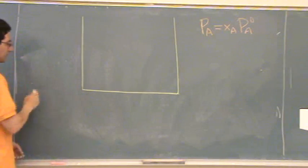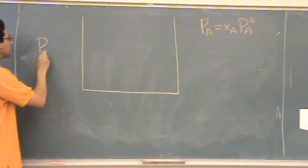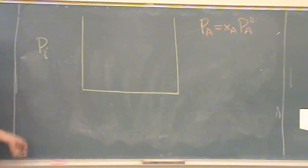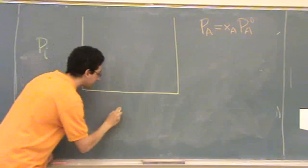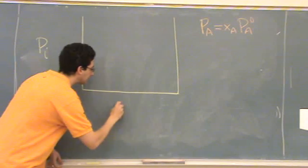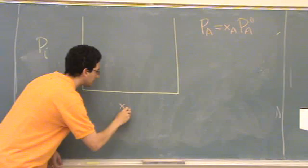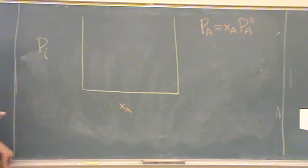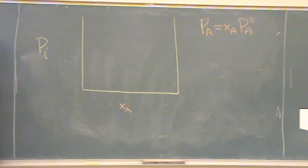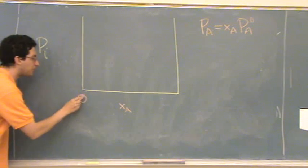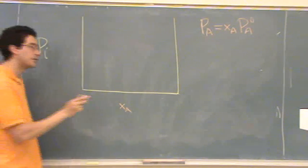Okay, so what we're going to do is plot on this side pressure of whatever component it is. So I'll put PI. Down here we're going to plot X. And I'll put XA in red. And XA, the smallest value it can be is what? Zero. Zero, and the biggest value for XA? One. One.